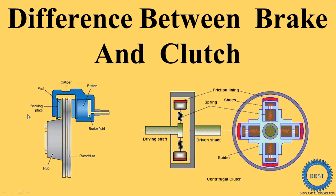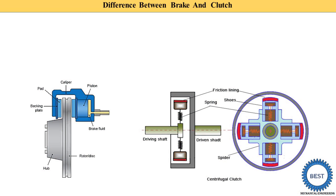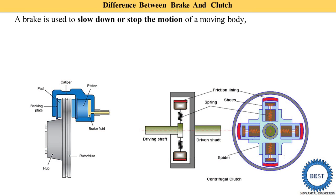In this video, I discuss the difference between brake and clutch. The first difference is that a brake is used to slow down or stop the motion of a moving body. In our vehicle, we use the brake to reduce the speed of the vehicle or stop it. This brake is also used in different mechanical equipment as well as in civil equipment.